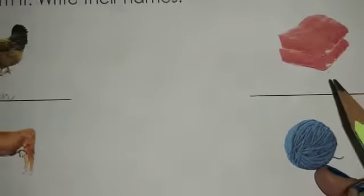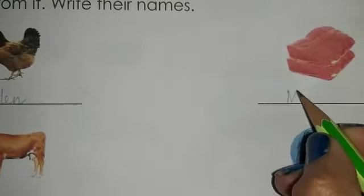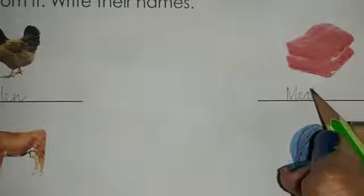After hen, let's identify this thing on the right hand side, this product. What is this? This is meat. So, write down meat. M-E-A-T, meat.